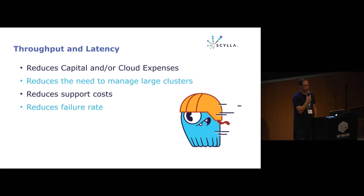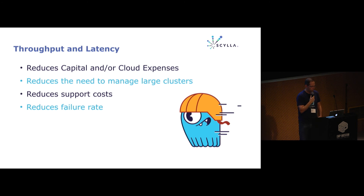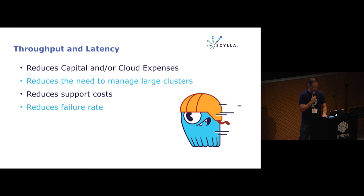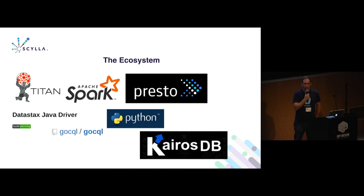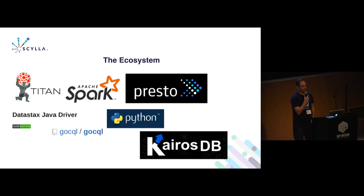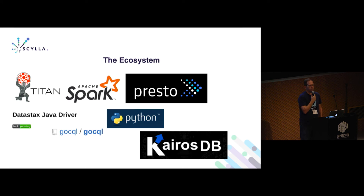Either your cloud infrastructure will be lower or smaller, giving you more capital for other processes and your application, while also reducing support costs and the need to handle failure mechanisms to keep your application running. From the application layer on top of Scylla, use your same drivers — Java, C#, C, Presto, Spark — any of those environments you're familiar with today will work on Scylla as well.